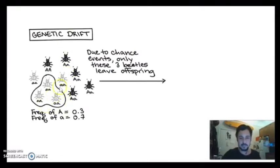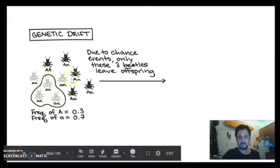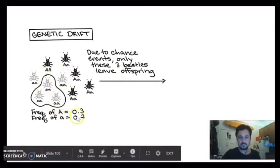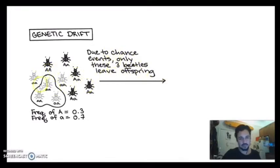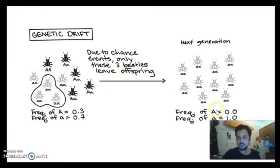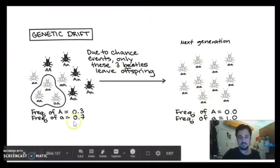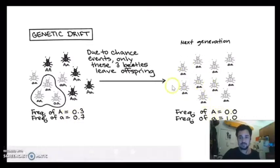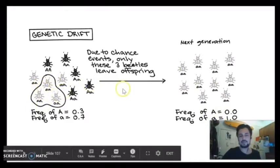Genetic drift - here you have a population of little beetles. You have light beetles and dark beetles, and the light beetles are recessive, little a little a. In this original population, the allele frequency of big A is 0.3 and little a is 0.7. But after this by chance event, the only ones that reproduced were these little white beetles, just by chance. So the next generation, you have only little a little a. And you've gone from a frequency of 0.3 big A, 0.7 little a, to a frequency of 1 of little a and 0 of big A. That's just by chance. We'll say that these just happened to be the ones that bred that year.